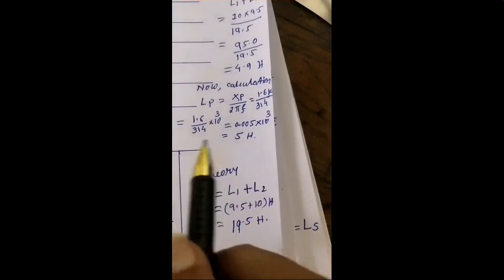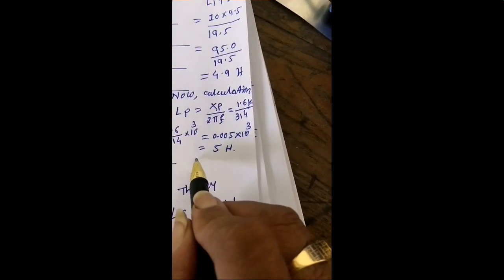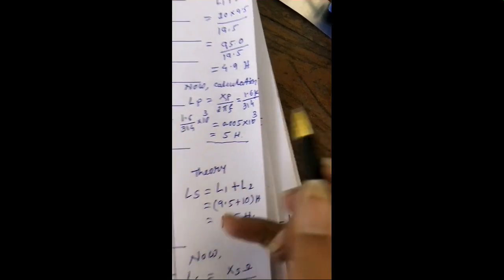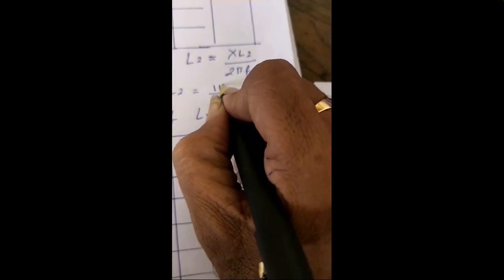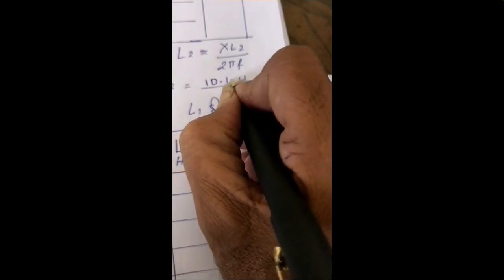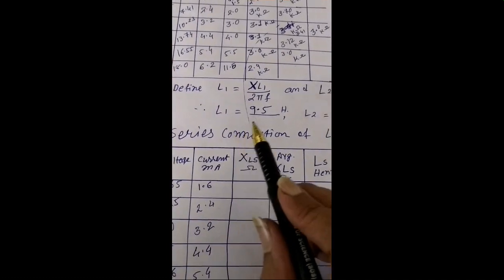The experimental and theoretical results match very well — good results. We could verify our experiment in a proper way. L1 was 9.5 henry and L2 was 10 henry, and we could justify the experiment properly.